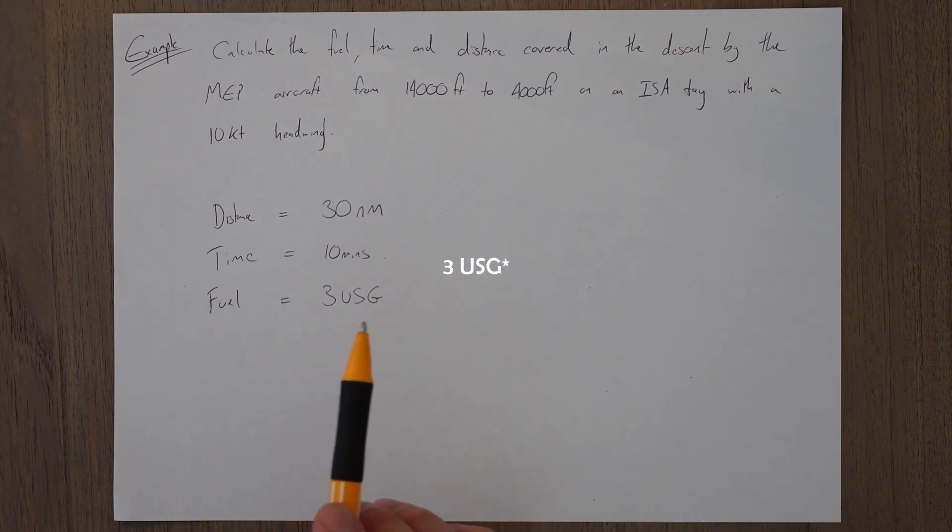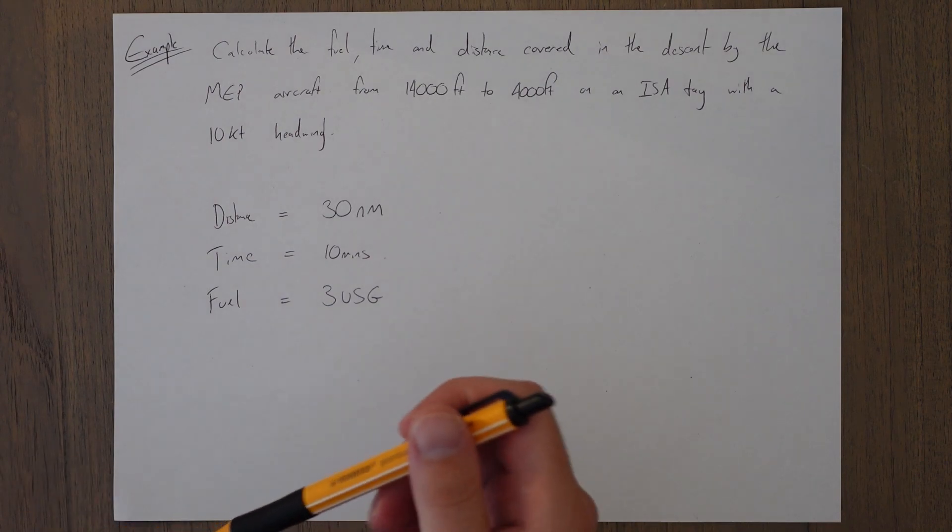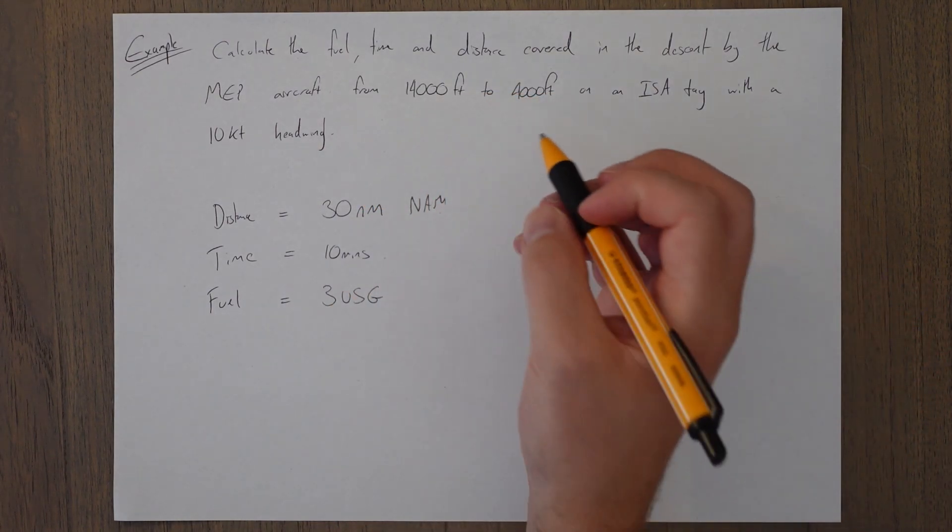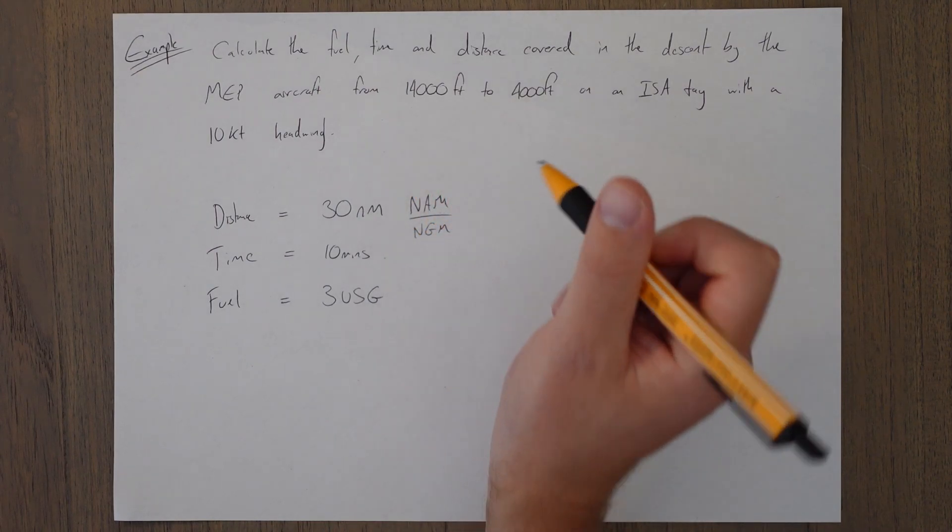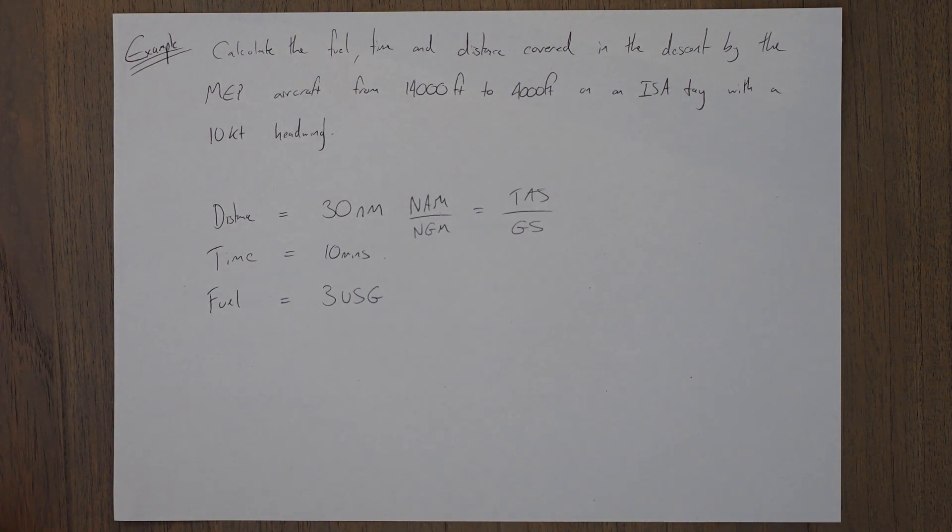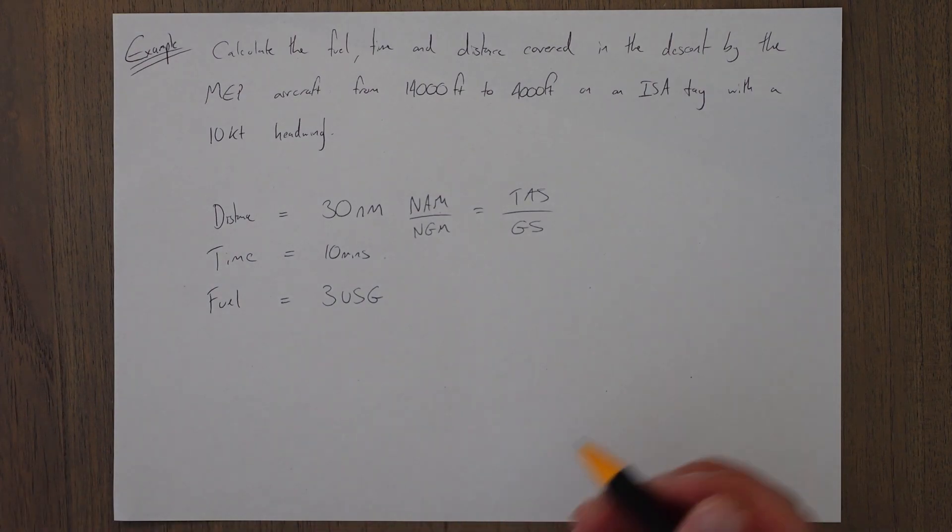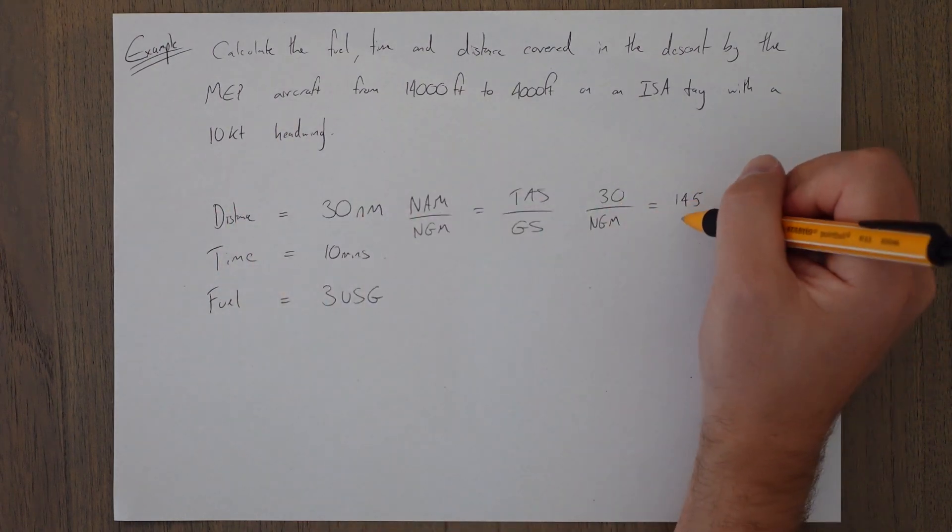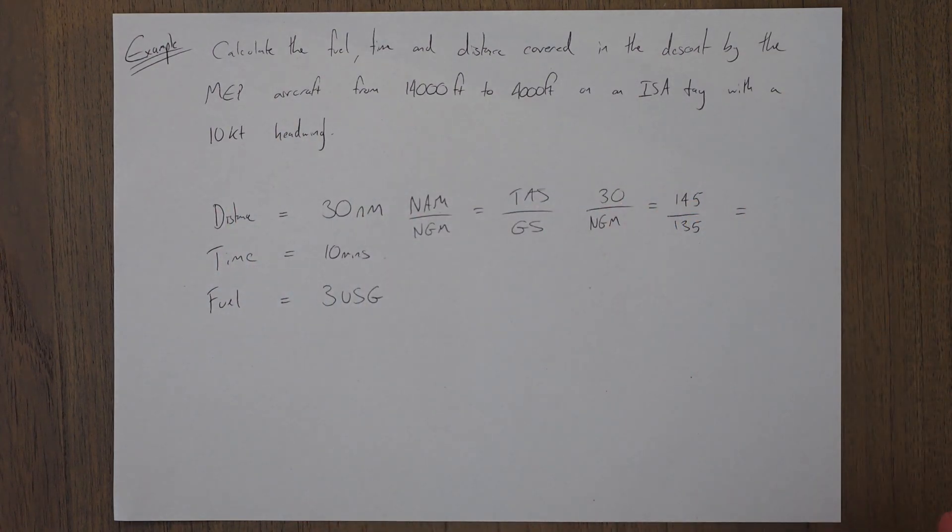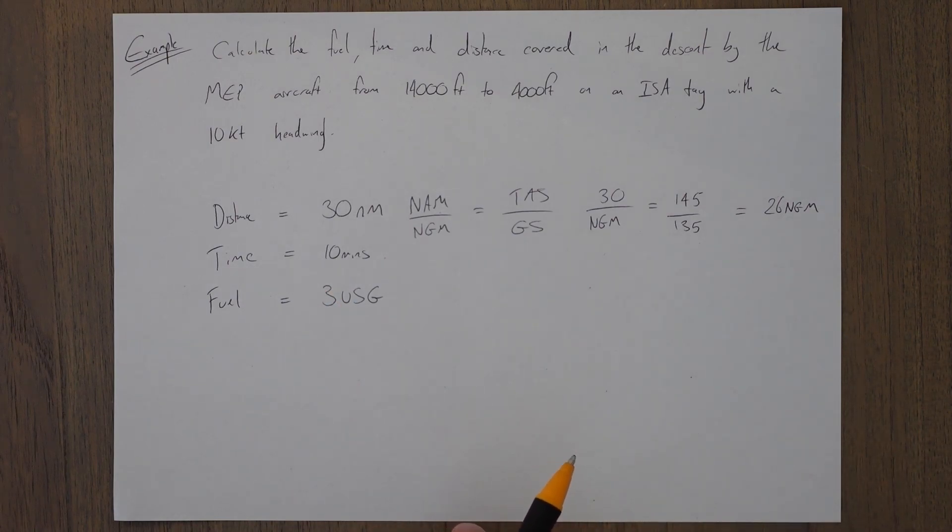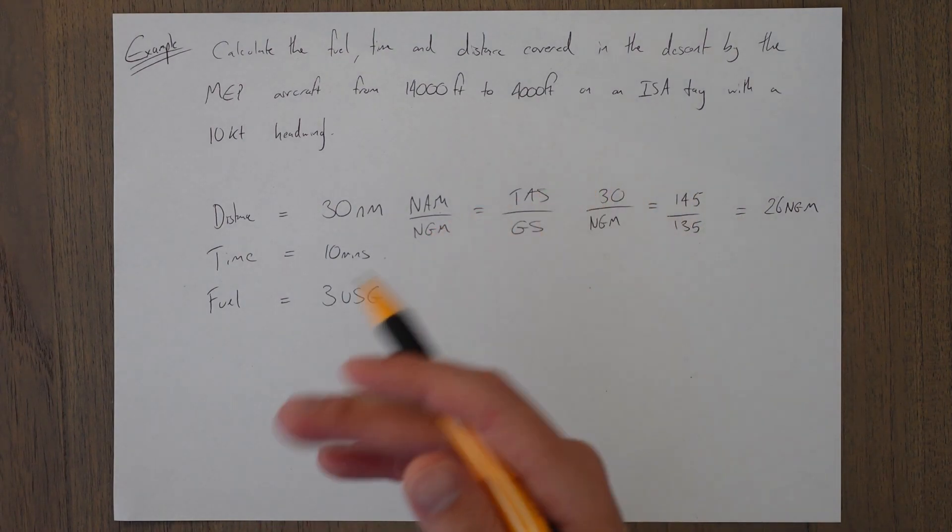So there you go—there's our answer: distance of 30 nautical miles, time of 10 minutes, and fuel of 3 US gallons. But remember there's no wind accounted for in that graph, so we're going to have to use that trick we learned right at the start: convert this from nautical air miles into nautical ground miles. So nautical air miles over nautical ground miles equals the true airspeed over the ground speed. The true airspeed in this graph is 145 knots, so that means our 30 nautical air miles over the nautical ground miles equals 145 over 135—10-knot headwind. Solve that and we get about 26 nautical miles.